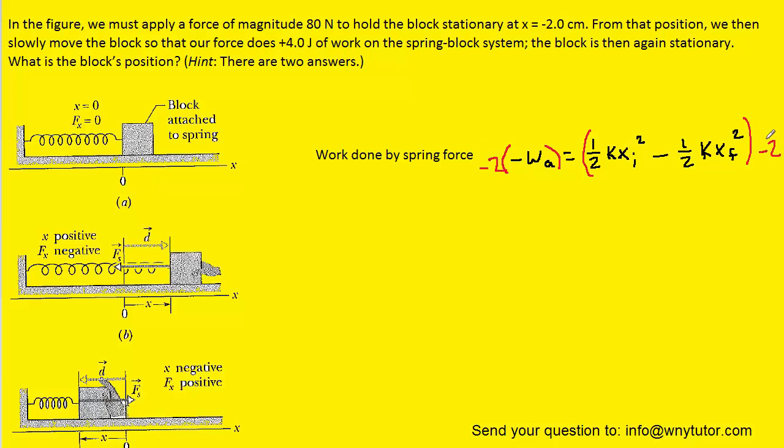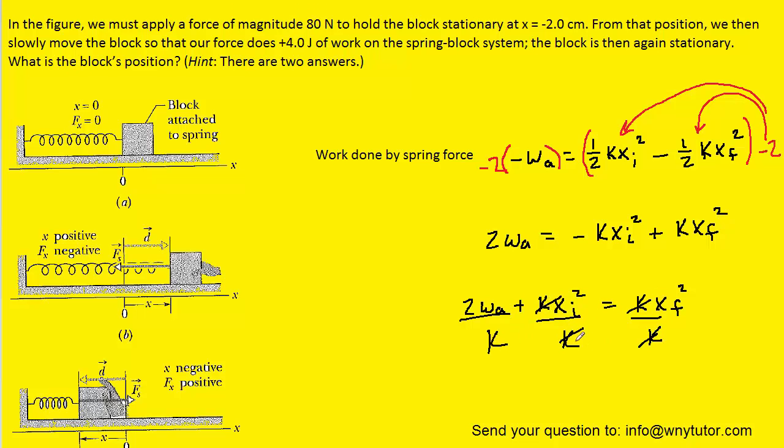We'll just make sure that we distribute the negative two to both terms on the right hand side. We could then add the term K X I squared over to the left hand side. We could then divide each term by K, so that it cancels out in two of the terms. And then finally we'll take the square root of both sides of the equation to isolate X sub F.